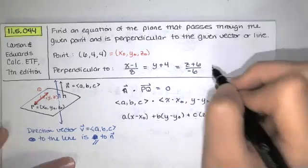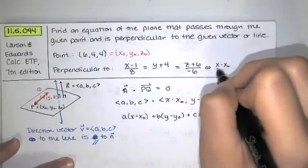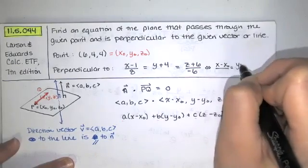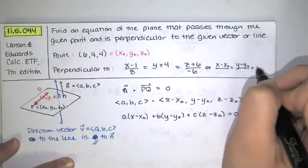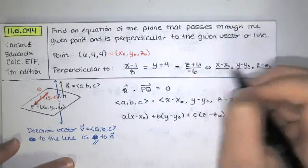Well when we're looking at the symmetric equations of a line, the direction vector appears or the components of the direction vector appears in the denominators of these guys. So you've got x minus x naught, y minus y naught, and z minus z naught in the numerator.